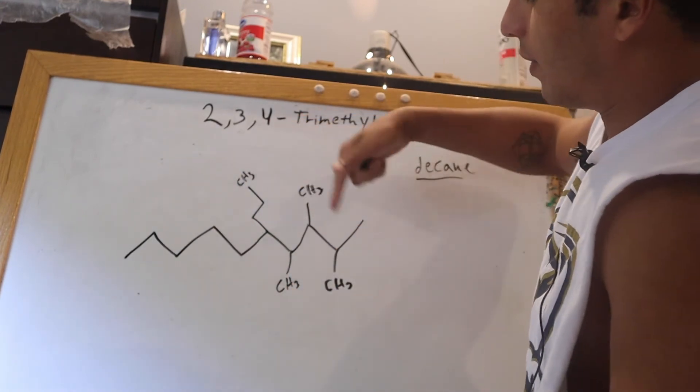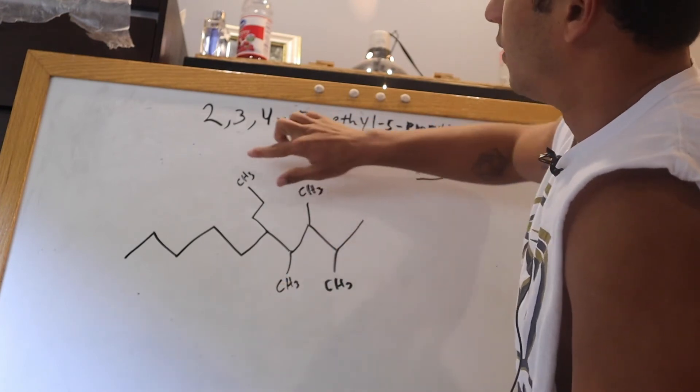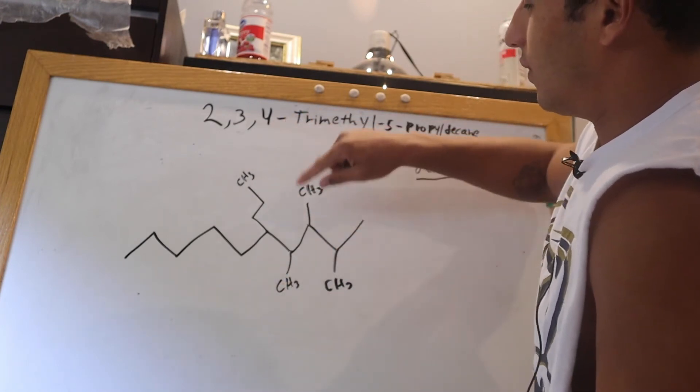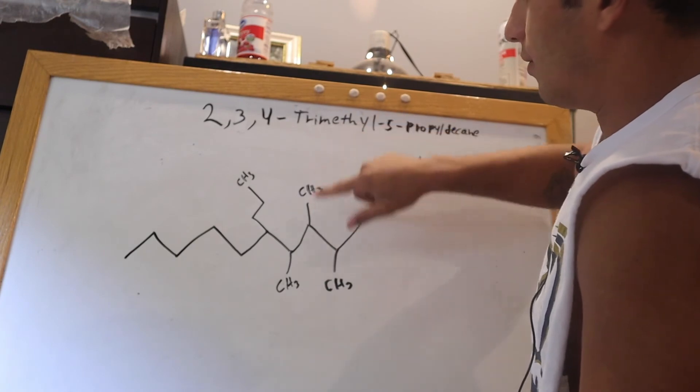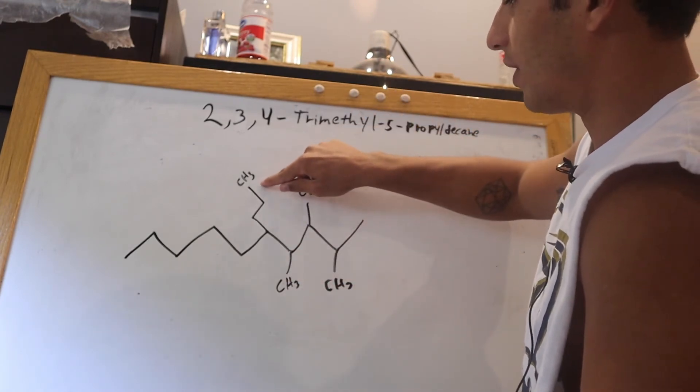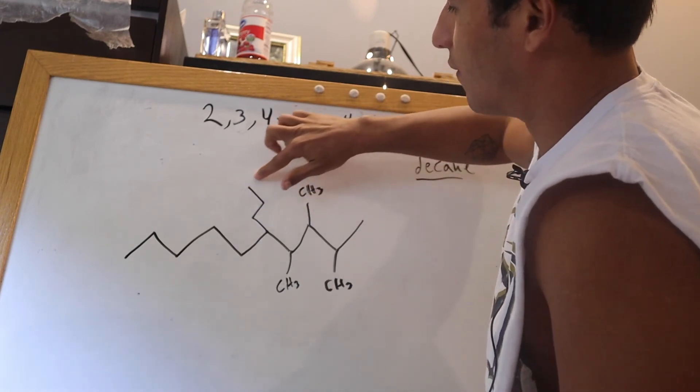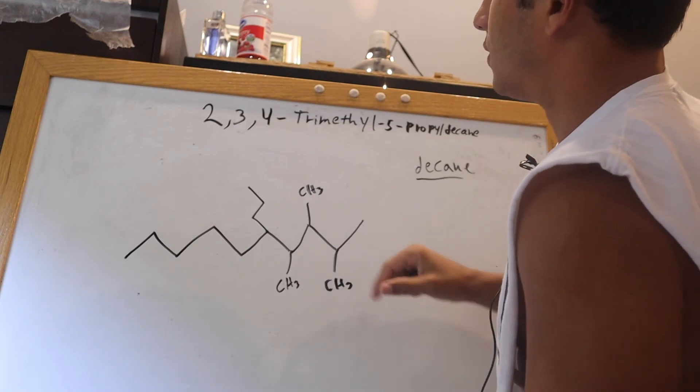But you don't write any of those. You obviously omit CH3. But I want to point this out because even though this says trimethyl, and we already have our three methyl groups here, this fourth methyl isn't part of that. It's part of a propyl group, so that's why it's not counted as four methyls.